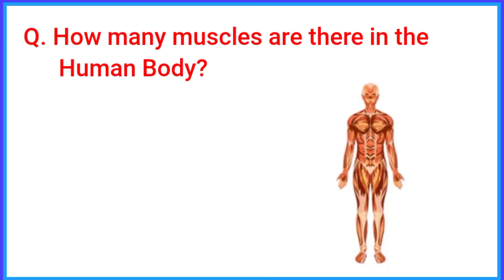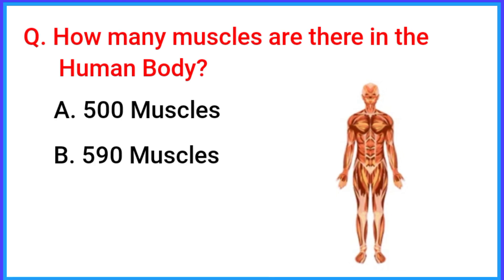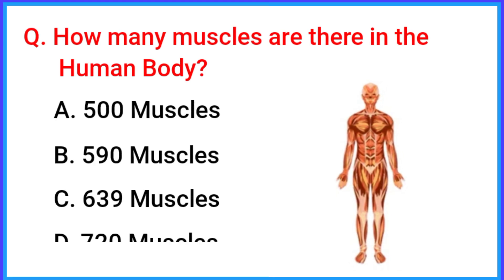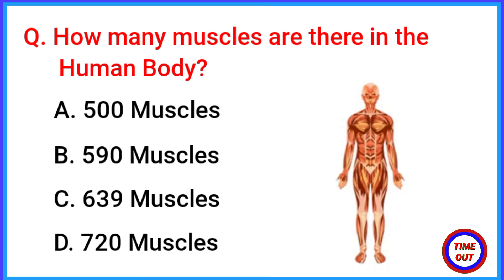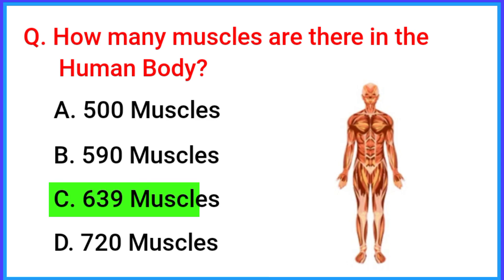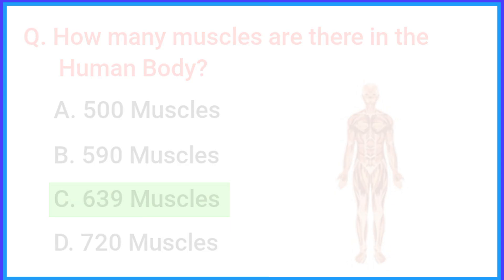How many muscles are there in the human body? The correct answer is option C: 639 muscles.